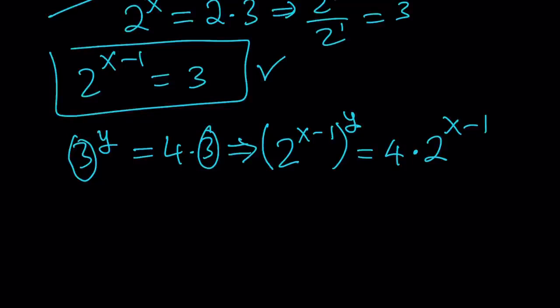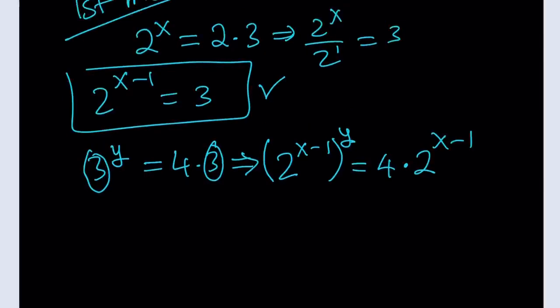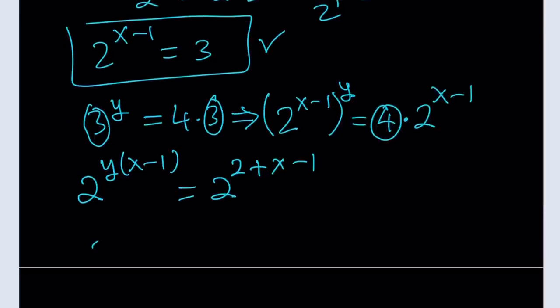Power of a power, we're supposed to multiply them. You can just go ahead and multiply this, but don't distribute because we want to keep the y alone, sort of. And this can be written as 2 to the second power. So it's kind of like 2 to the power 2 plus x minus 1, which you can write as, okay, I'm going to show my work. Anyway, so it's going to be like this. 2 to the power y times the quantity x minus 1 equals 2 to the power x plus 1.